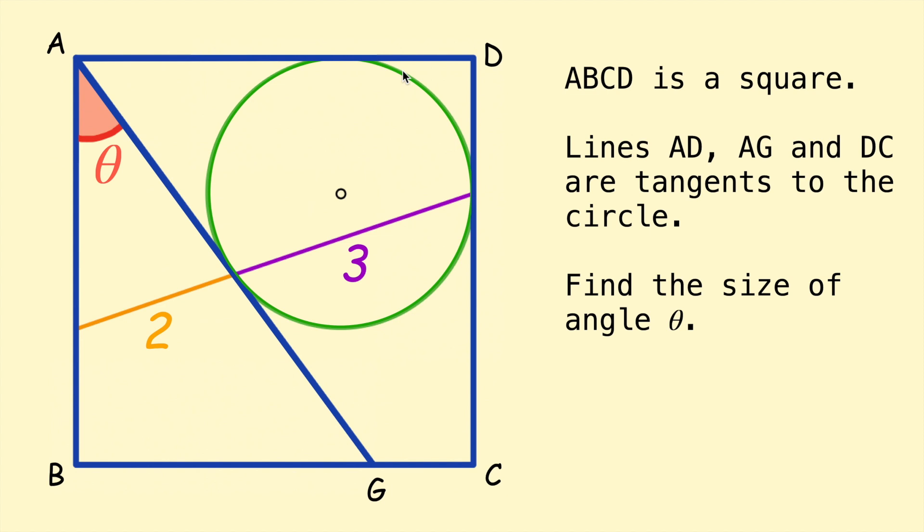This problem says ABCD is a square. Lines AD, AG and DC are tangents to the circle. Find the size of angle theta. If you'd like to give this problem a go, pause the video now.